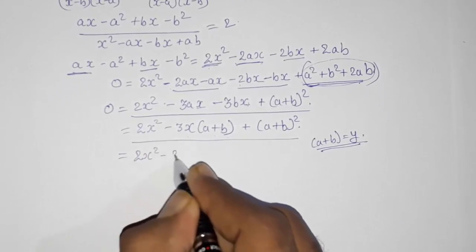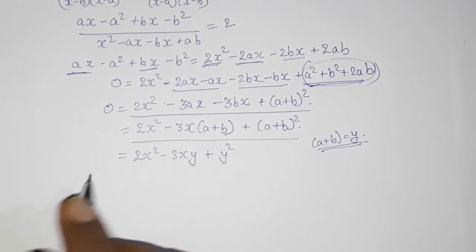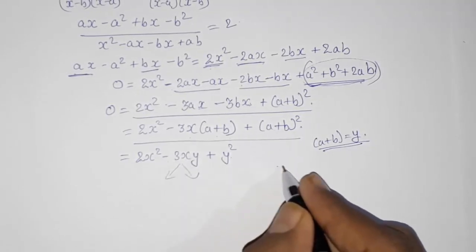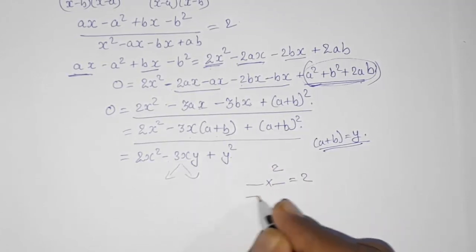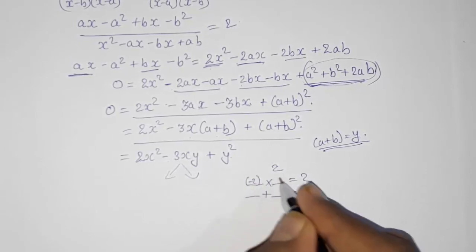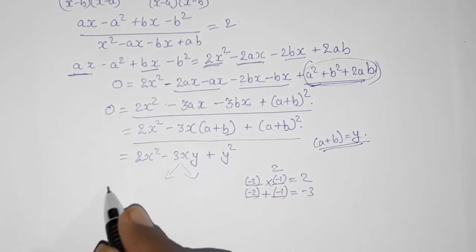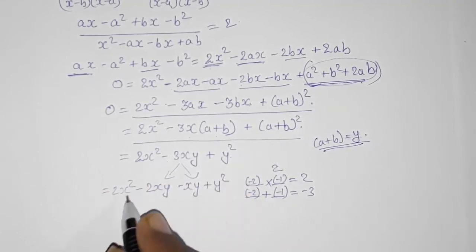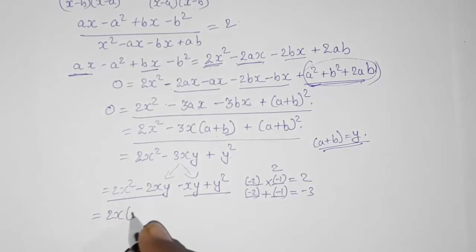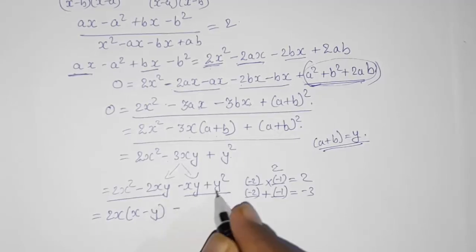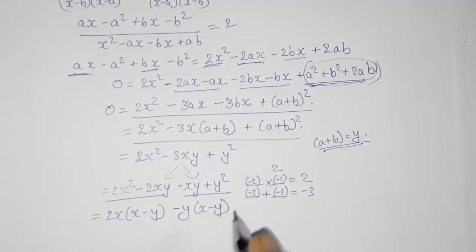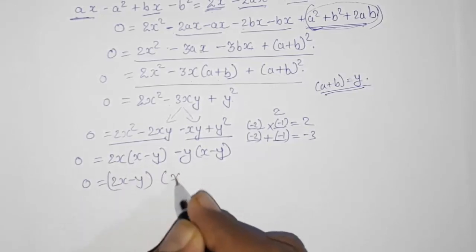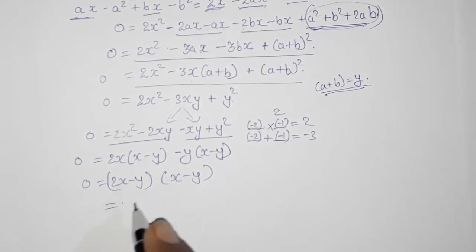Now splitting the middle term: factors of 2 times y squared that add to minus 3y are minus 2y and minus y. So: 2x squared minus 2xy minus xy plus y squared. Taking common: 2x(x minus y) minus y(x minus y) equals 0. So (2x minus y)(x minus y) equals 0.